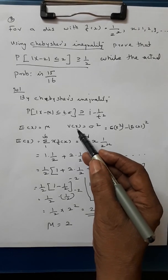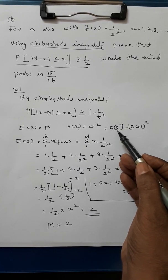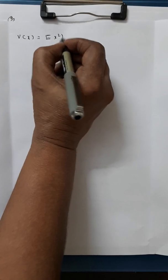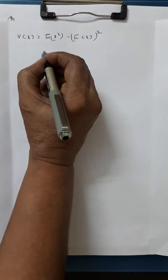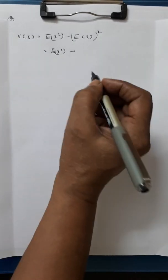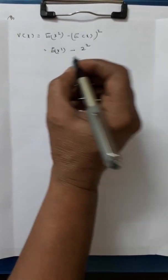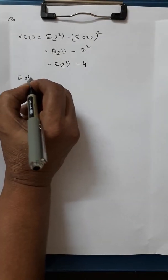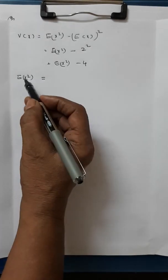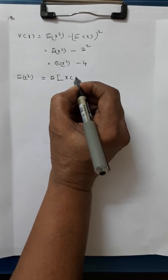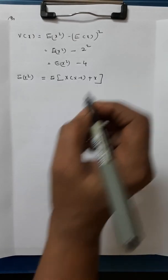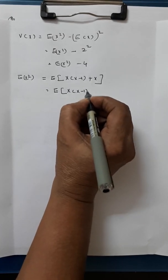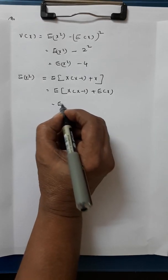Now we are going to find the variance of x. For that, we need E(x squared). We know V(x) equals E(x squared) minus E(x) whole square, that is E(x squared) minus 2 squared, which is E(x squared) minus 4. So let us find E(x squared), which we write as E of x(x minus 1) plus E(x), since x(x minus 1) plus x equals x squared.